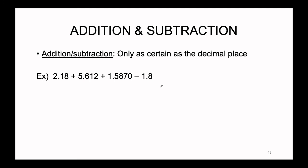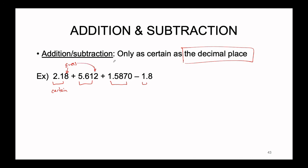With addition and subtraction, you don't even need to count sig figs — you just pay attention to decimal places. Every last digit in each measured value represents a guess or estimate. If you add a number that is uncertain to any other number, your answer will also contain some level of uncertainty. We stack the numbers vertically to see where the guesses lie: in 2.18, the 8 is a guess; in 5.612, the 2 is a guess; in 1.5870, the 0 is a guess; and in 1.8, the 8 is a guess.